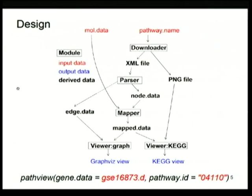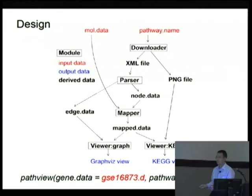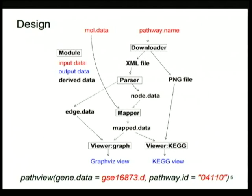This diagram shows you the internal design of PATH-View. PATH-View has four functional modules: the downloader, the parser, the mapper, and the viewer. It is this full module that takes care of the hard work and tedious work in the back end. In the front end, we provide a main function. The user only needs to call this main function PATH-View, pass their user data, and specify their pathway of interest, and their work gets done. It's that easy.